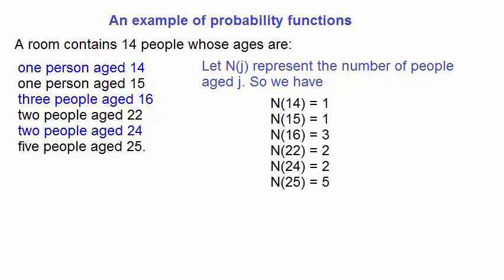n14 equals 1, that is the number of people at 14 years of age is 1, and so on. We can also say that the total number of people, n, is nothing more than the sum of the number of people of varying ages in the room, that is the sum of n as a function of j, which has to equal 14.